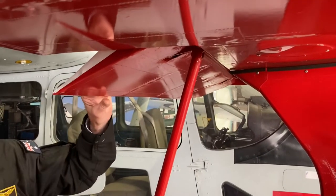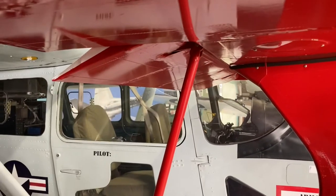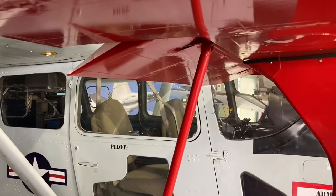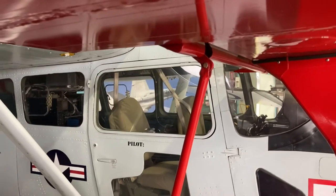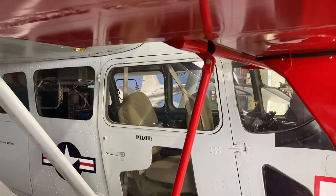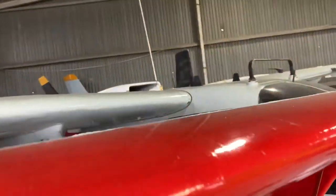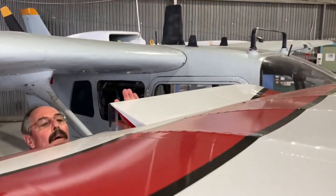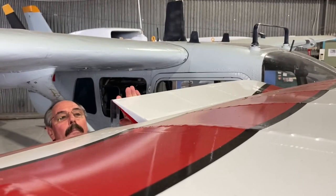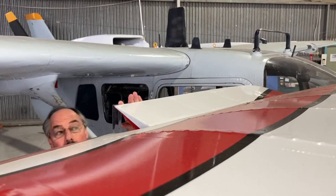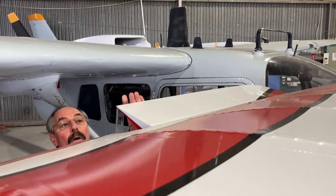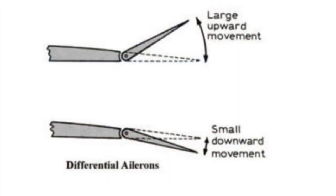Now let's have a look at how far it goes up on the other side — I'll just move the control column. Measuring that distance with the ruler, I can see that it's about nine and a half, possibly ten centimeters. So the up-going aileron goes up more than the down-going aileron goes down.